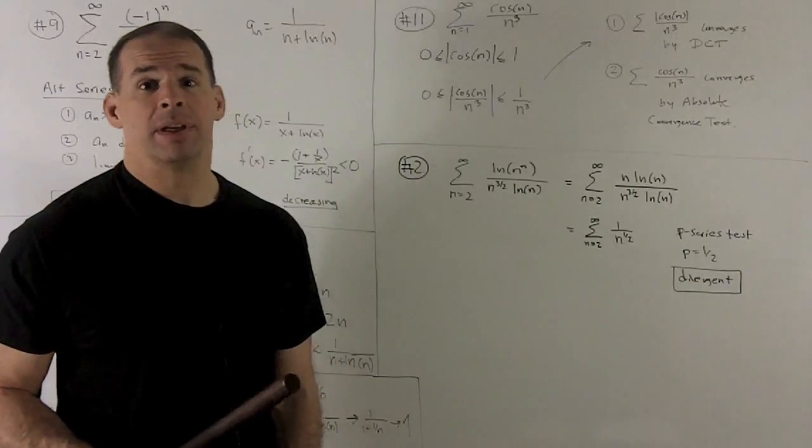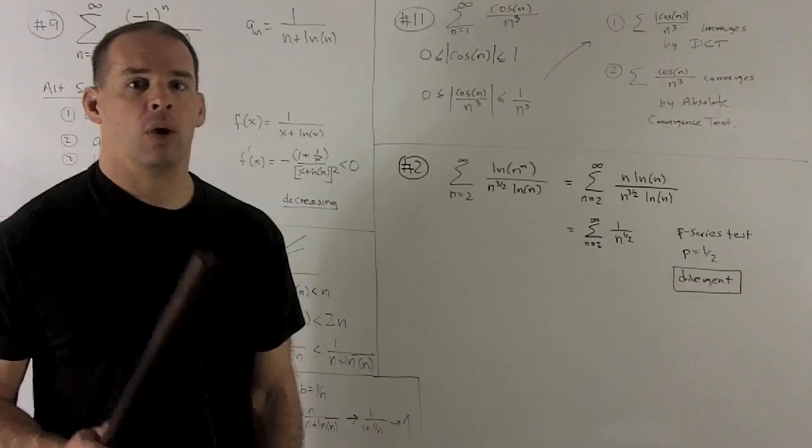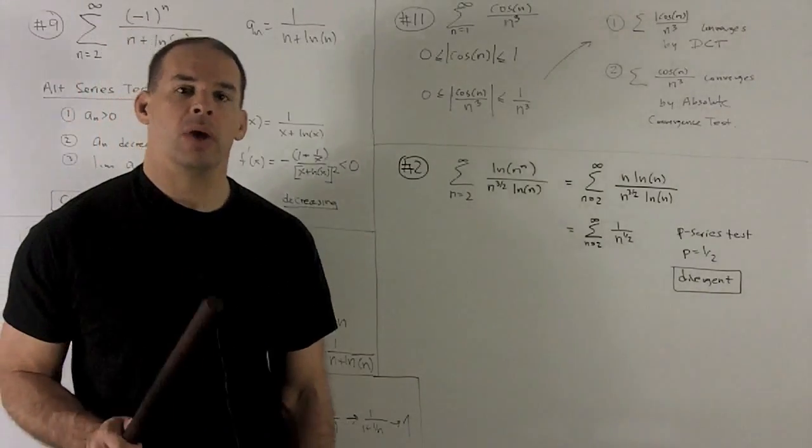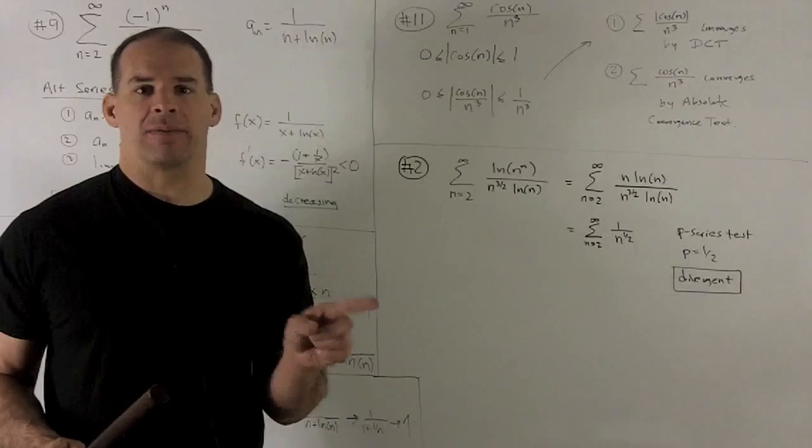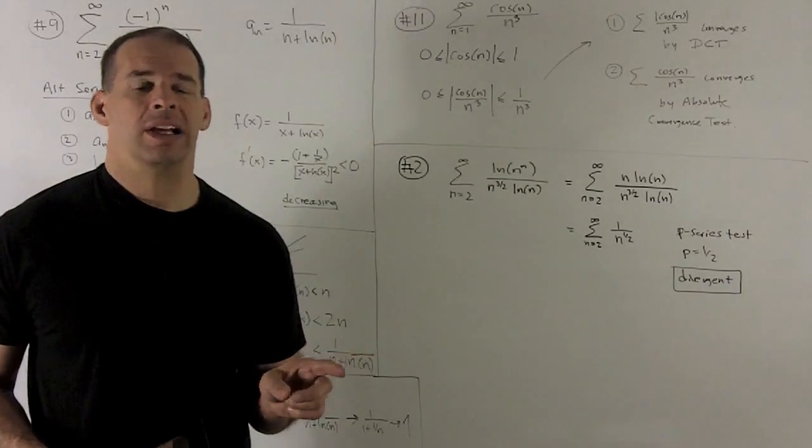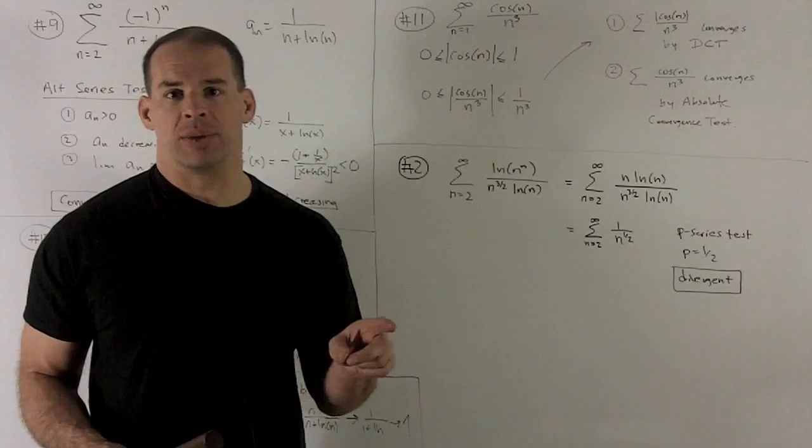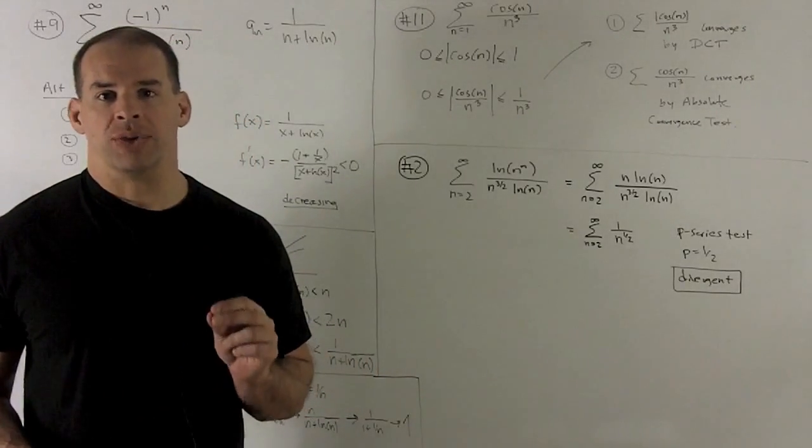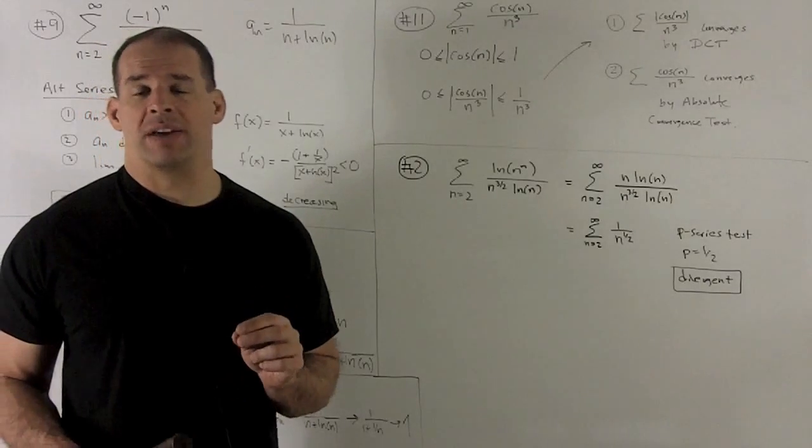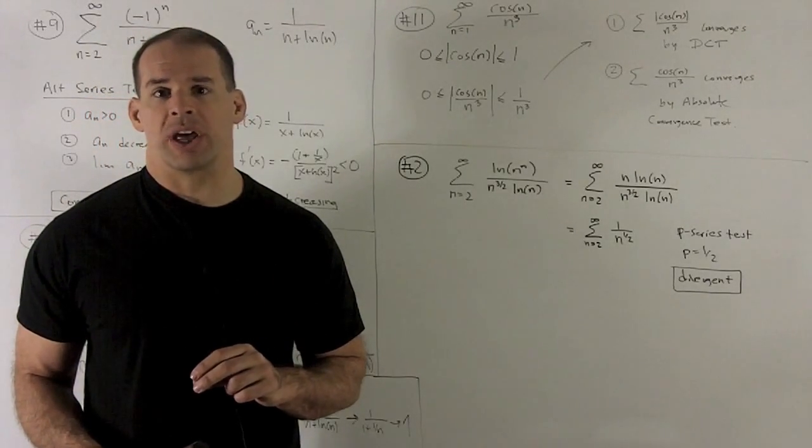Number 11, take the sum as n goes from 1 to infinity of cosine n over n cubed. Now, note, this is cosine n. It's not cosine of n pi, which would just bounce back and forth between minus 1 and 1. So, I'm taking cosine of an integer. This is going to go from minus 1 to 1 and hit a lot of values in between. So, I need to get that under control. The way I'll do that, we have cosine of anything is between minus 1 and 1. So, let's take the absolute value of cosine.